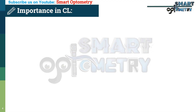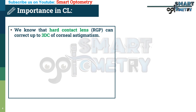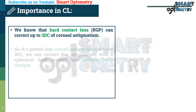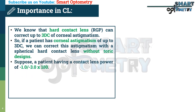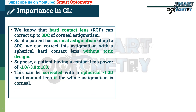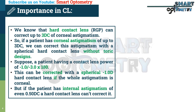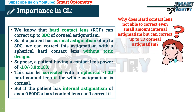Now the importance of internal astigmatism in contact lens fitting. Hard contact lenses can correct up to 3 D cylinder of corneal astigmatism, so if a patient has corneal astigmatism up to 3 D cylinder, we can correct this with a spherical hard contact lens without a toric design. Suppose a patient needs -1.00 D spherical and -3.00 D cylinder at 180°. This can be corrected with a spherical -1.00 D hard contact lens if the whole astigmatism is corneal. But if the patient has internal astigmatism of even 0.50 D cylinder, a hard contact lens cannot correct it.